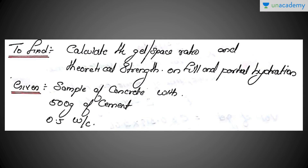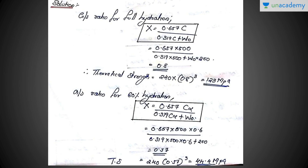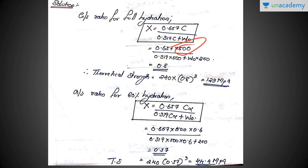Now let's see an example problem. We have to calculate the gel space ratio and the theoretical strength for both full and partial hydration. Given: a concrete sample with 500 grams of cement and a water-cement ratio of 0.5. So C = 500 g and W₀ = 250 ml. For the gel space ratio of full hydration, applying the formula X = 0.657C / (0.319C + W₀), we get X = 0.8.